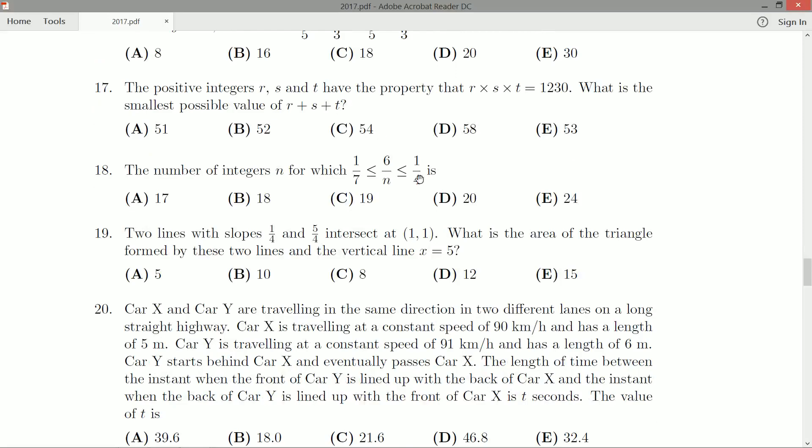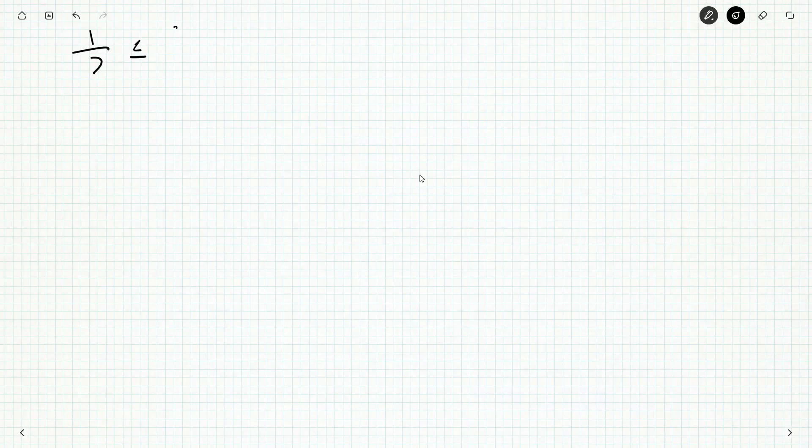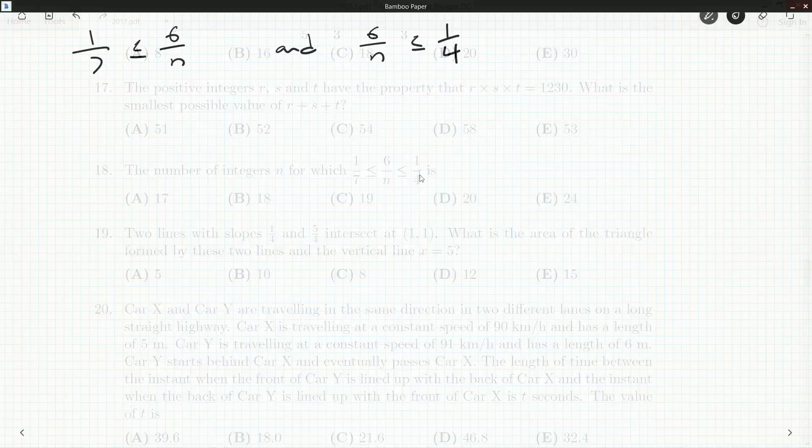Now this looks like one big inequality, but what we can do is actually rearrange and get two inequalities. So really we're trying to satisfy 1/7 less than or equal to 6/n and at the same time 6/n less than or equal to 1/4, and those are less than or equal signs.